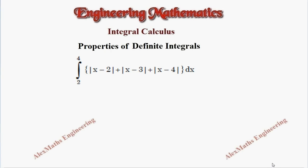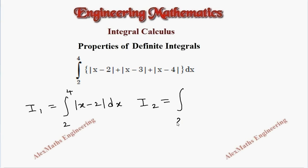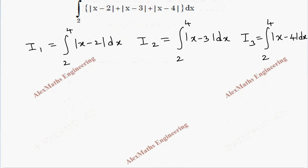Hi students, this is Alex. In this video we are going to solve an integral problem using the properties of the definite integral. We have a modulus expression, and I'm going to split this into three integrals: I1 equals integral from 2 to 4 of |x minus 2| dx, I2 equals integral from 2 to 4 of |x minus 3| dx, and I3 equals integral from 2 to 4 of |x minus 4| dx.